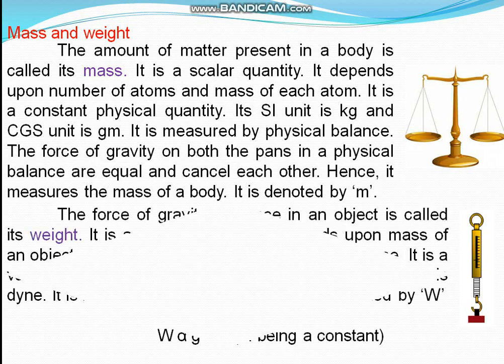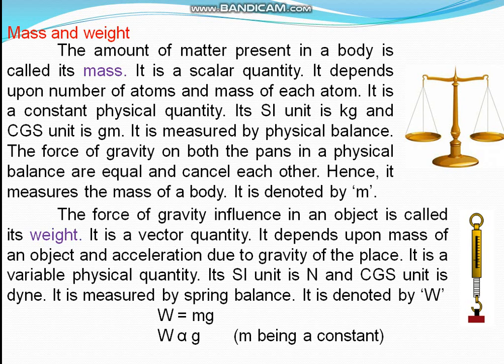The force of gravity acting on an object is called its weight. It is a vector quantity and a variable quantity, because weight equals m times g, and g changes from place to place, so weight will change. Weight is directed towards the center of the heavenly body, because acceleration due to gravity acts towards the center of the heavenly body.